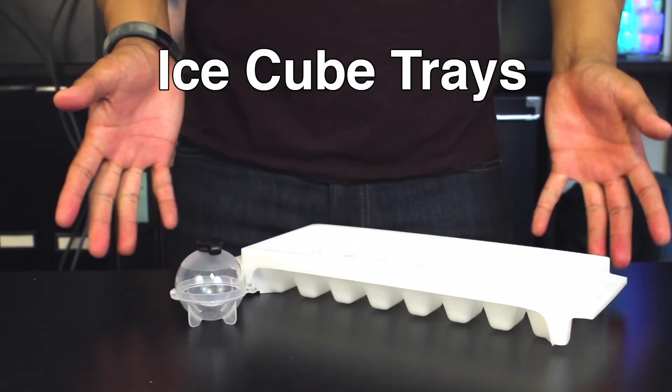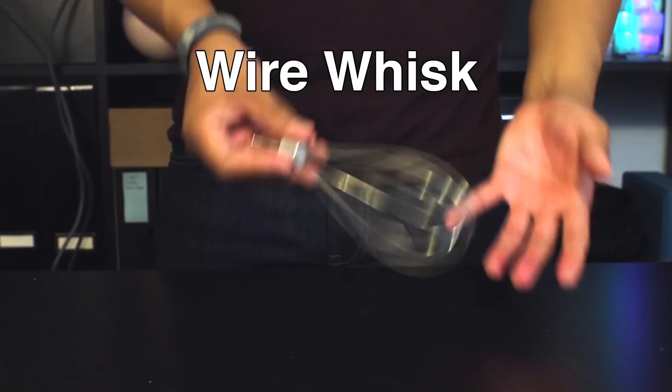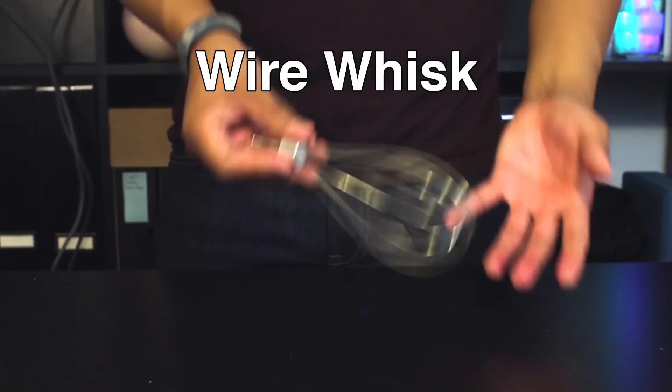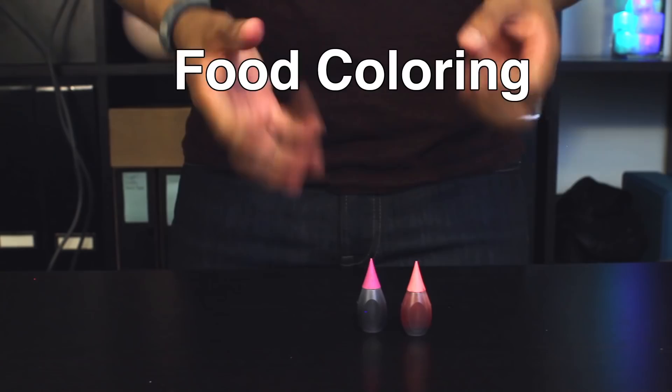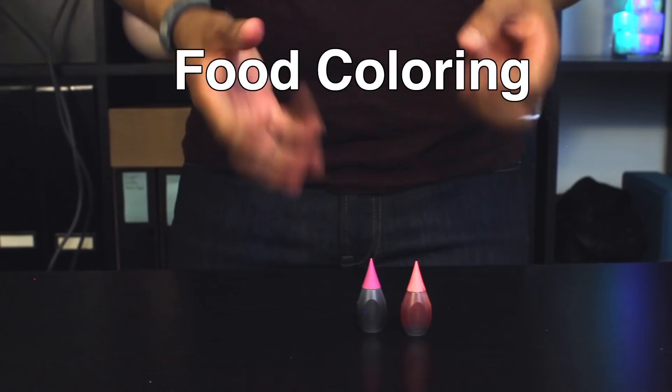The items that you'll need for today's project include a hand mixer, some ice cube trays, a slotted spoon, one small bowl, two larger bowls, a whisk, some Mio if you plan to flavor up your water. Today we're using peach tea, and food coloring.